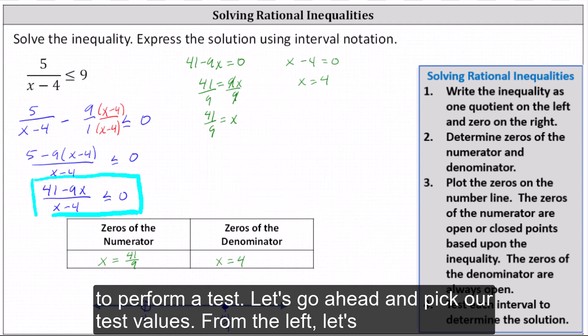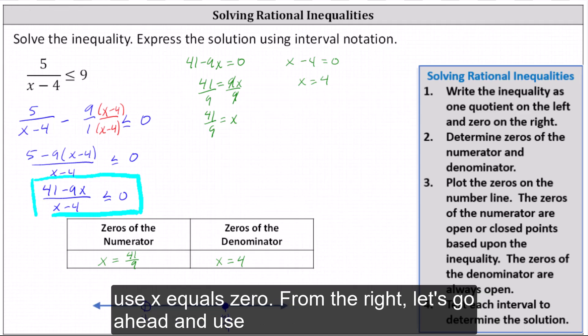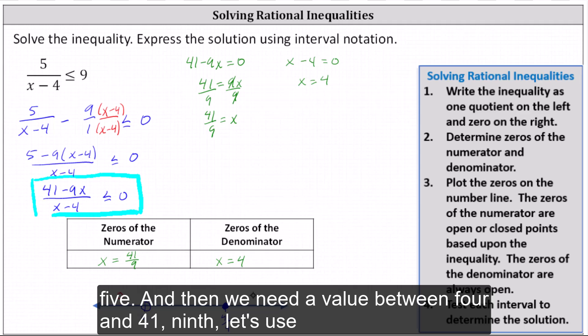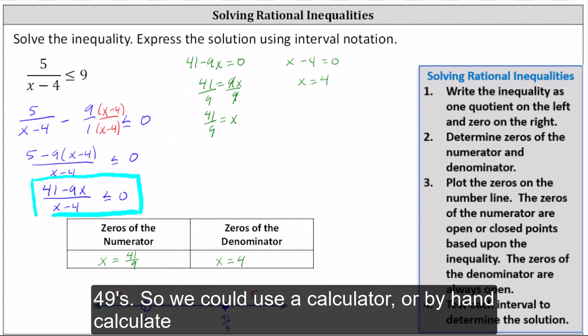Let's pick our test values. On the left, let's use x equals zero. On the right, let's use x equals five — five is greater than 41 ninths because 45 ninths equals five. And between four and 41 ninths, let's use 40 ninths.